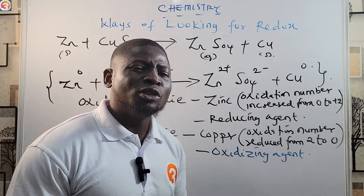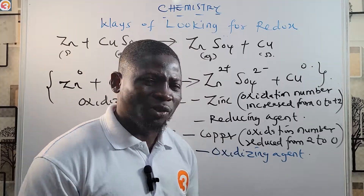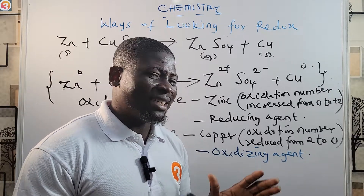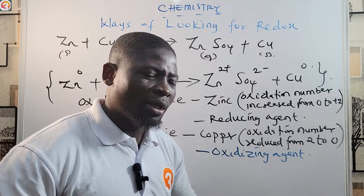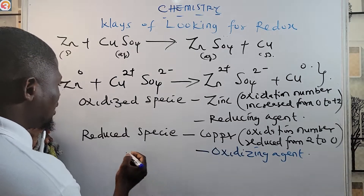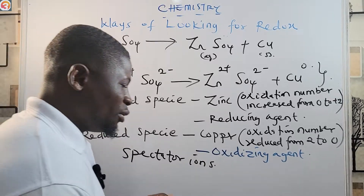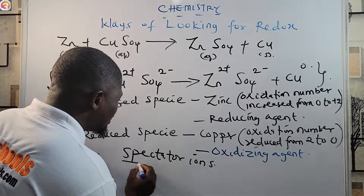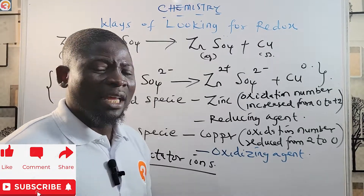What about SO₄²⁻? Its oxidation number was −2 initially and remains −2 in the product — it did not change. This is a typical exam question: ions present in a redox reaction but that do not participate in the redox itself are called spectator ions. Their oxidation number remains unchanged.